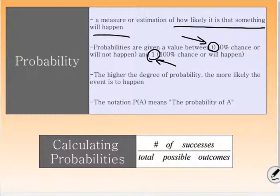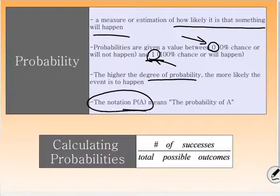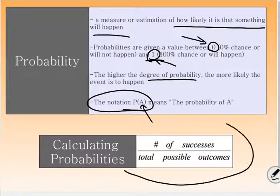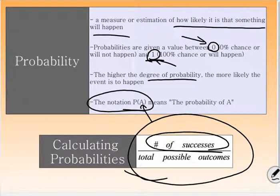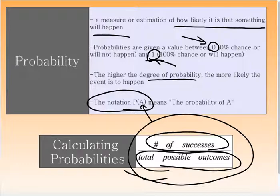The higher the degree of probability, the more likely the event is going to happen — the closer it gets to one, the more likely it's going to happen. This notation, which you will see quite a bit, literally means the probability of event A, so like the probability of rolling a die and getting a six. Probabilities are calculated as a fraction: number of things you want to happen over everything that could happen — number of successes over total possible outcomes.